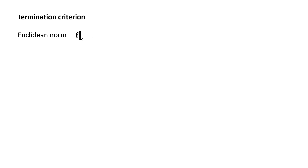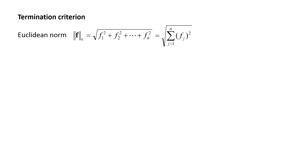One possible criterion for terminating the method involves the Euclidean norm of the function vector, denoted as the vector f inside two sets of vertical lines with a subscript e. We calculate the norm by summing the squares of all n functions — f1 squared plus f2 squared through fn squared — then taking the square root. This can be expressed as the square root of the summation of fj squared, where j varies from 1 to n. Each time you calculate the function vector, you also calculate the Euclidean norm. If the norm is below some small value epsilon — say 10 to the negative 5 — you have likely found values of the n variables that are very close to the actual solution.